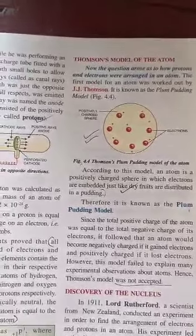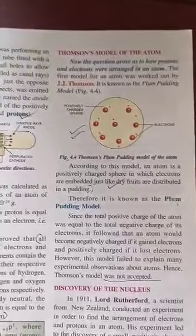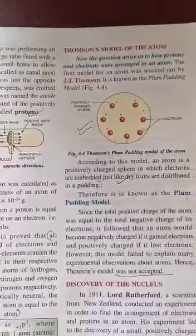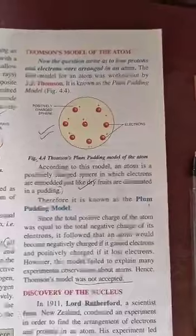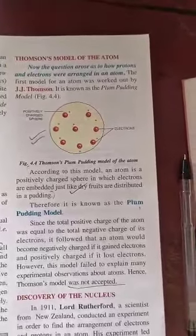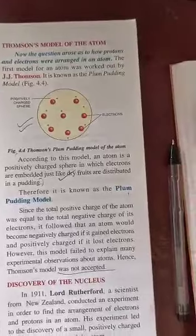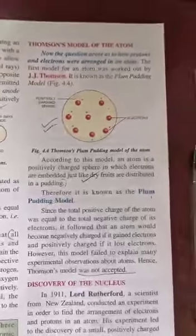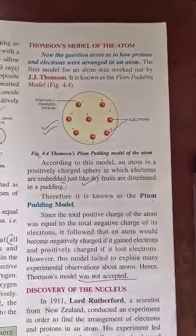Electrons are negatively charged particles. Protons are positively charged particles. That's why we are going to talk about the electrons, and the electrons are revolving around the nucleus.